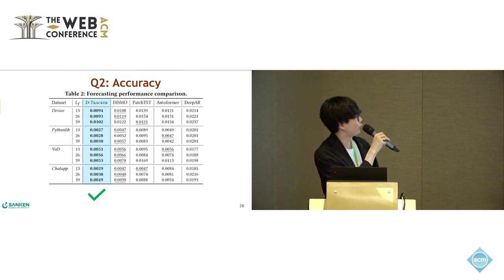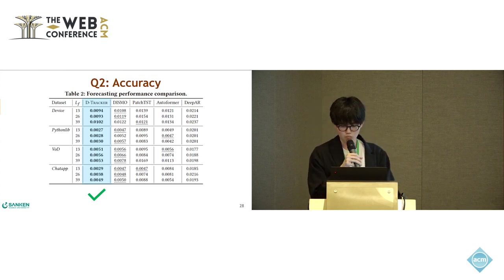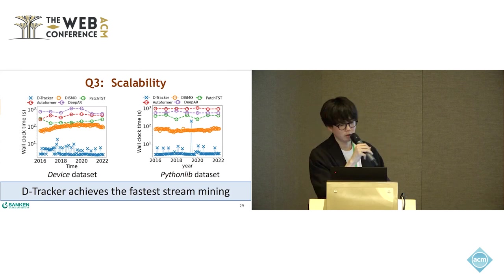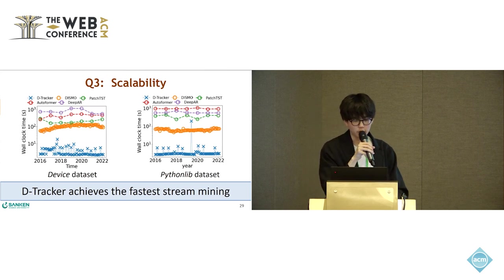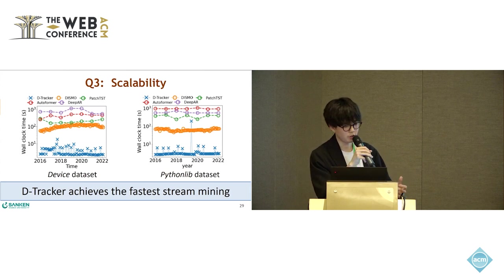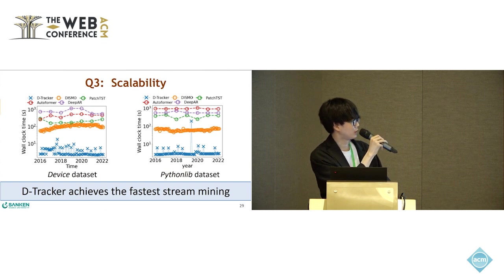This is the forecasting performance comparison. D-Tracker consistently outperforms the baselines. This is also the comparison of computational time. While deep learning models require significant time to retrain from scratch when new data is observed, D-Tracker incrementally trains the model, giving good performance in streaming scenarios. D-Tracker achieves the fastest stream mining.